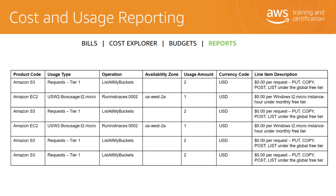The AWS Cost and Usage Report is a single location for accessing comprehensive information about your AWS costs and usage. This tool lists usage for each service category used by an account and its users in hourly or daily line items, as well as any tags that you have activated for cost allocation purposes. You can choose to have AWS publish billing reports to an Amazon S3 bucket that you own. These reports can be updated once a day in comma-separated value CSV format, and may be viewed using spreadsheet software or accessed from an application using the Amazon S3 API.